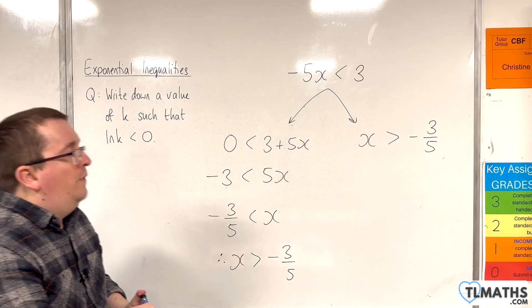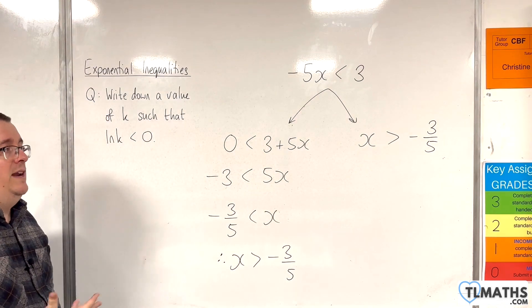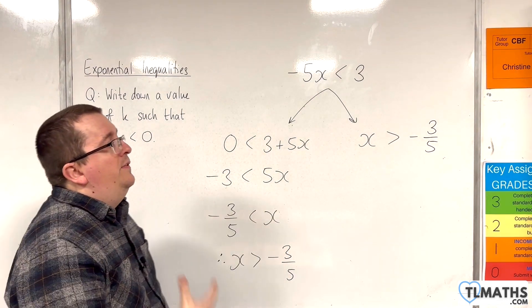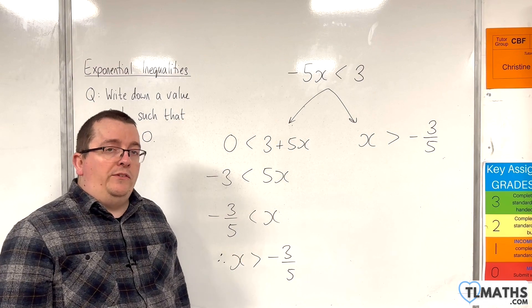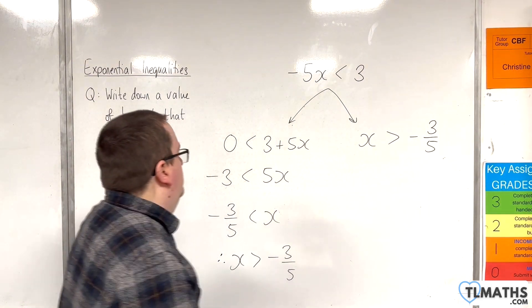So, that is the first thing that we need to know about. If I multiply or divide through an inequality by a negative number, then it will change the direction of the inequality symbol. Okay? So, that's number one.